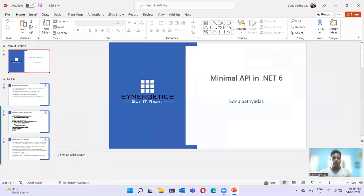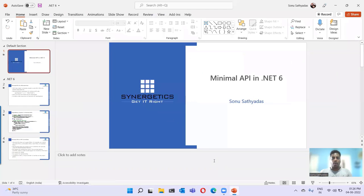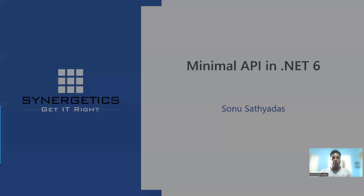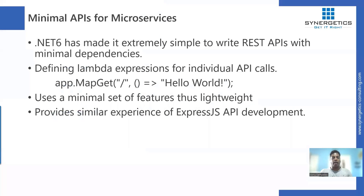.NET 6 is the latest framework from Microsoft and the latest implementation of .NET in open source. In .NET 6, they have introduced lots of new features and one of the new features is minimal API.